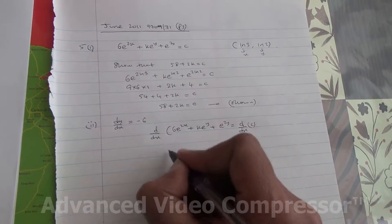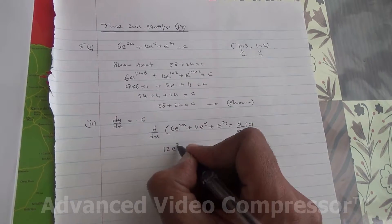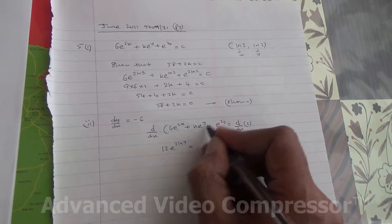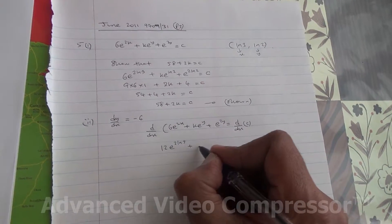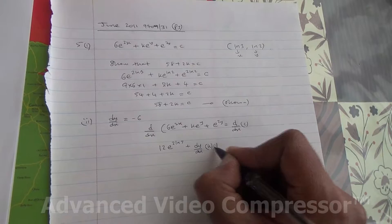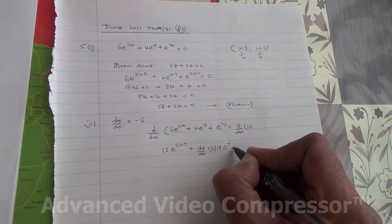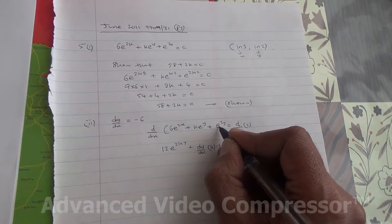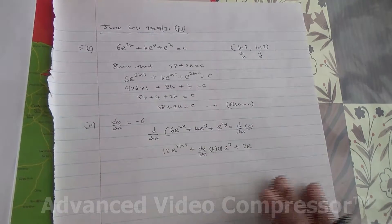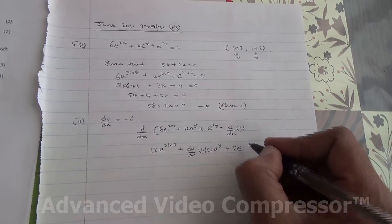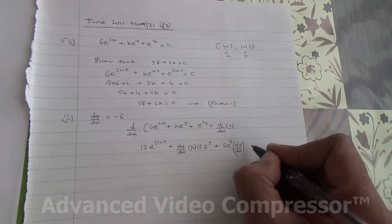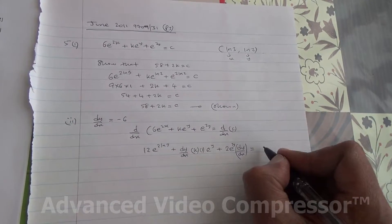Alright, differentiating this, 2 times 6 is 12, e to the 2x plus, differentiating y, this is implicit differentiation, you're going to get dy by dx. So I've got then dy by dx times k times 1 e to the y, plus e to the 2y. So we're going to get then 2e, and y is an implicit function, so differentiating y we're going to get dy by dx. And not to forget the power 2y is equal to differentiating a constant, you're going to get 0.